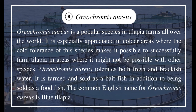Oreochromis aureus is especially appreciated in colder areas where its cold tolerance makes it possible to successfully farm tilapia where it might not be possible with other species. Oreochromis aureus tolerates both fresh and brackish water and is farmed and sold as a bait fish in addition to being sold as a food fish. The common English name for Oreochromis aureus is blue tilapia.